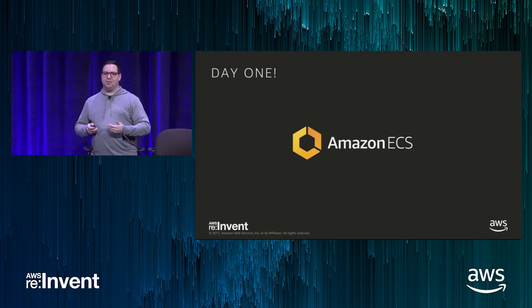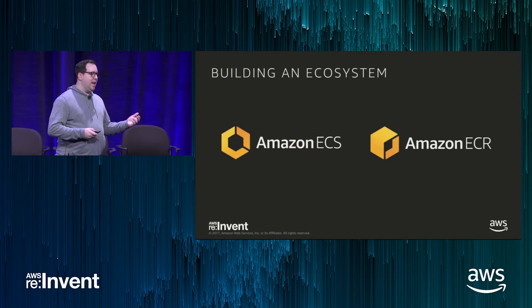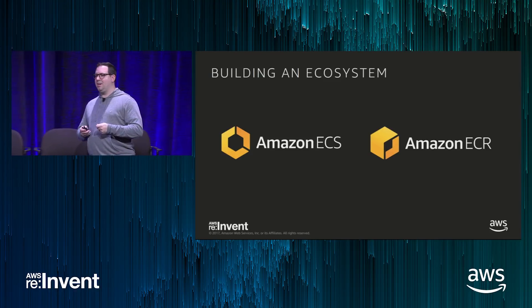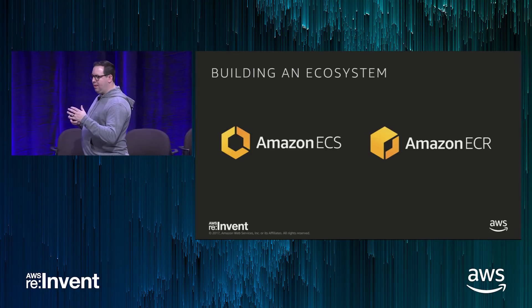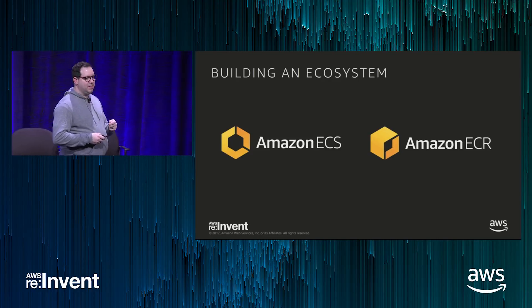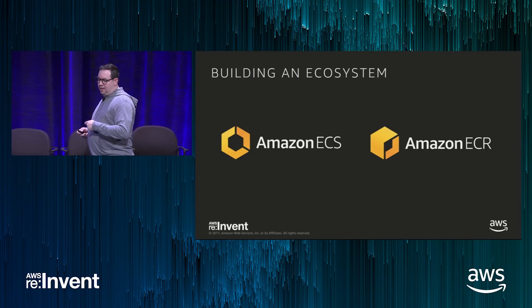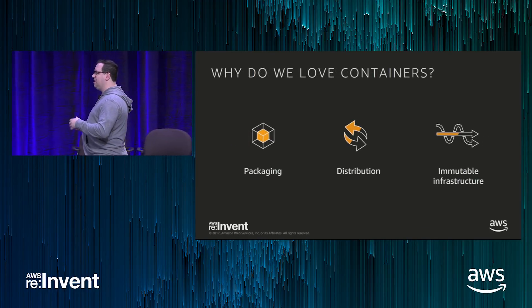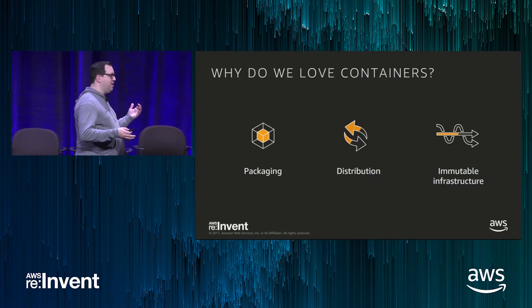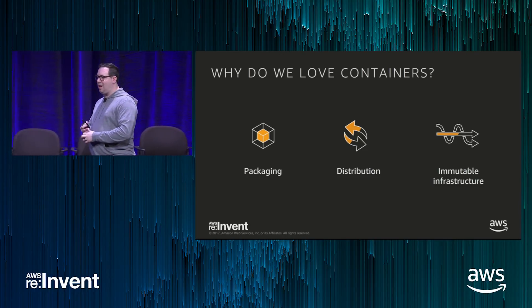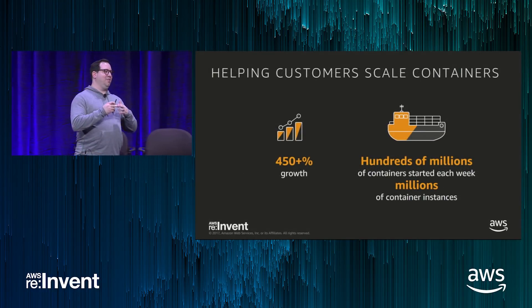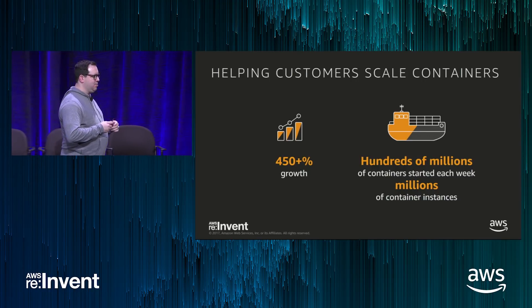One of the first obvious learnings was that to run a reliable container-based infrastructure, you need a reliable container registry. So the following year at re:Invent 2015, we announced Amazon Elastic Container Registry, or ECR. The goal was to provide a really high-performant, secure private repository where customers could store their images. After that, this ecosystem really allowed customers to start scaling their applications, taking advantage of the primitives Docker provided — the packaging, the distribution model, the immutable infrastructure — leading to really fast growth of container-based workloads on AWS.